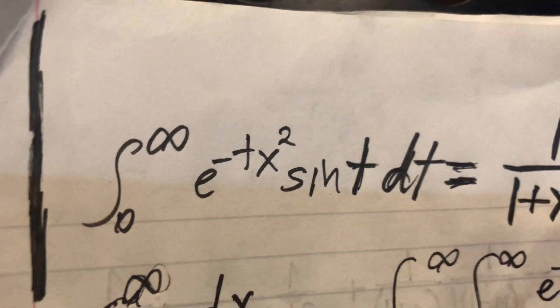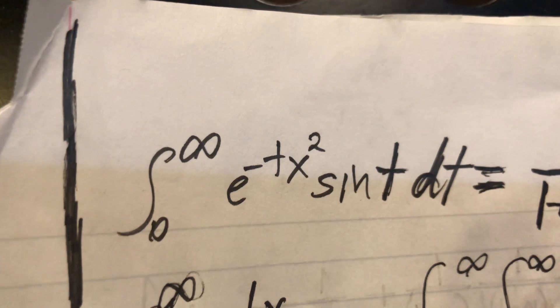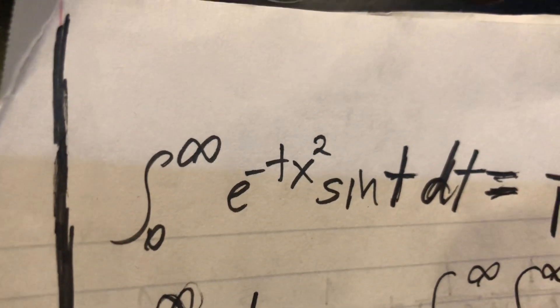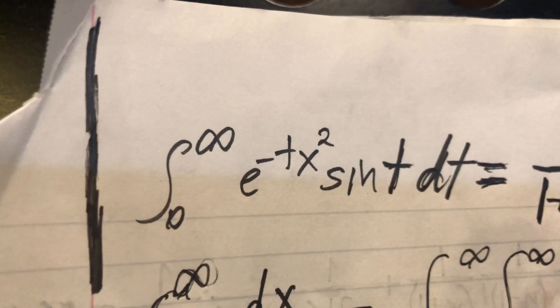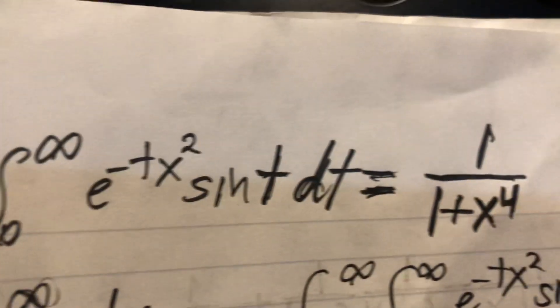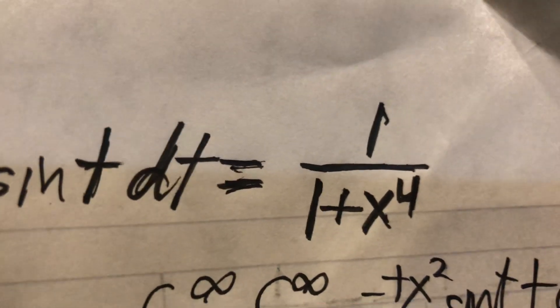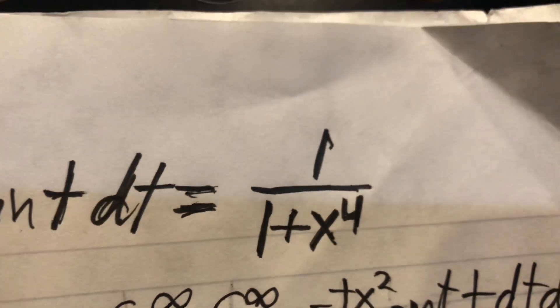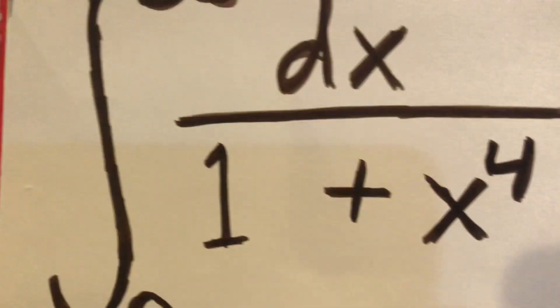This sort of looks like a Laplace transform, which it is, except instead of a regular variable like s, we're using x squared in the exponential. So that's the only difference. Instead of getting a standard Laplace transform of sine which would be 1 over 1 plus x squared, this gives us 1 over 1 plus x to the fourth, which is exactly what we need.